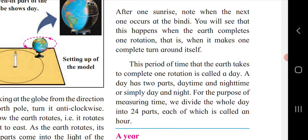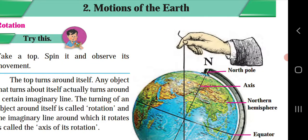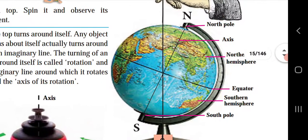Let's summarize what we discussed today in Chapter 2: Motions of the Earth. We saw the earth's rotation, the North and South Pole — N means North Pole and S means South Pole. The line that divides the earth into two equal parts is known as the equator — it is an imaginary line. The part above the equator is the Northern Hemisphere and the part below the equator is the Southern Hemisphere.